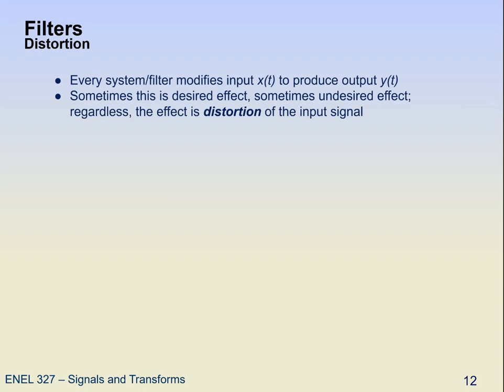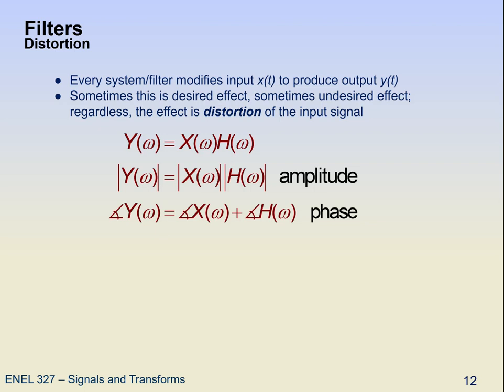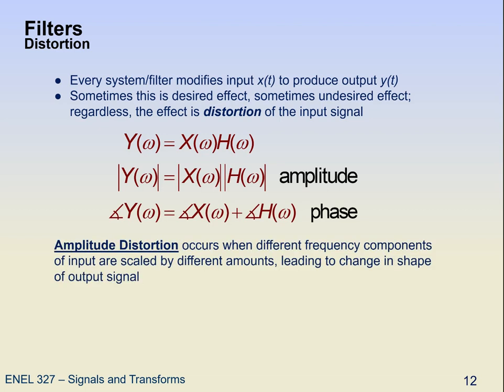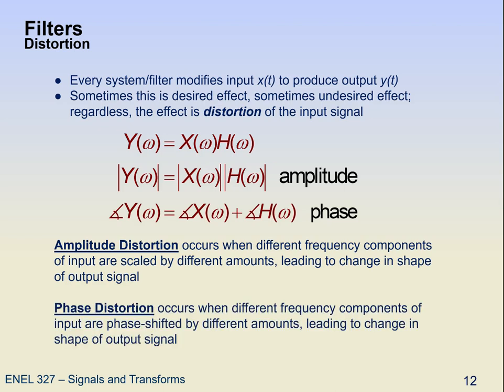Every system or filter modifies an input, and sometimes we get undesired effects — distortion of the input signal. We think of this in the frequency domain in terms of amplitude distortion and phase distortion. Amplitude distortion occurs when different frequency components are scaled by different amounts, leading to a change in shape of the output signal. Phase distortion occurs when different frequency components are phase shifted by different amounts, which also leads to a change in shape of the output signal.